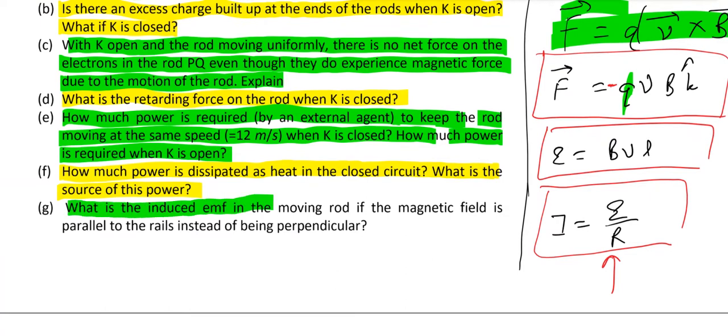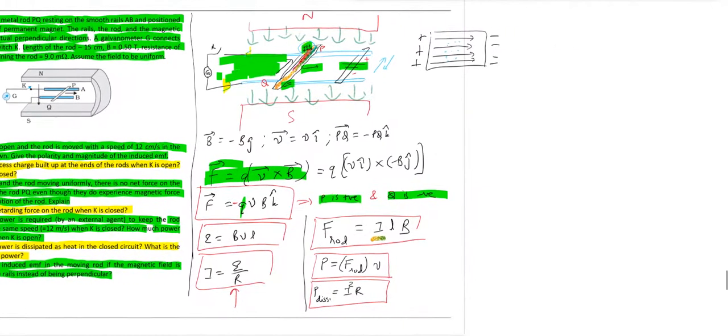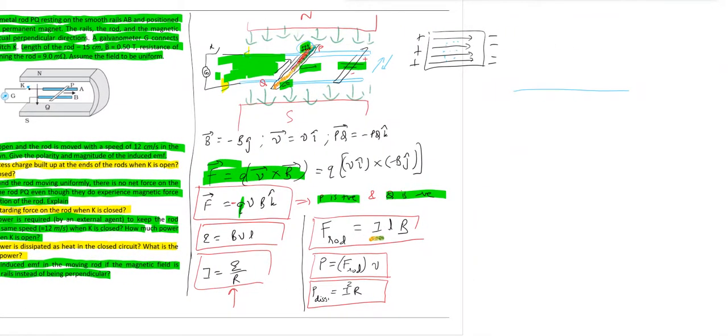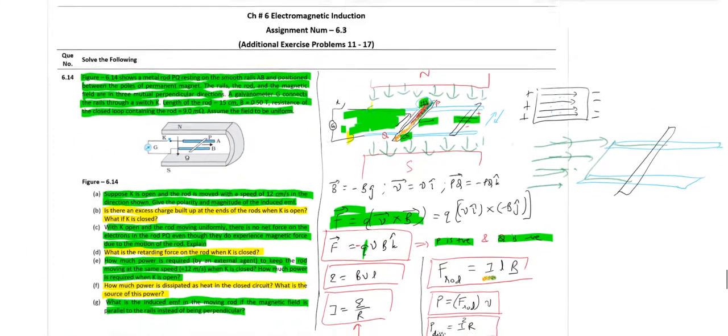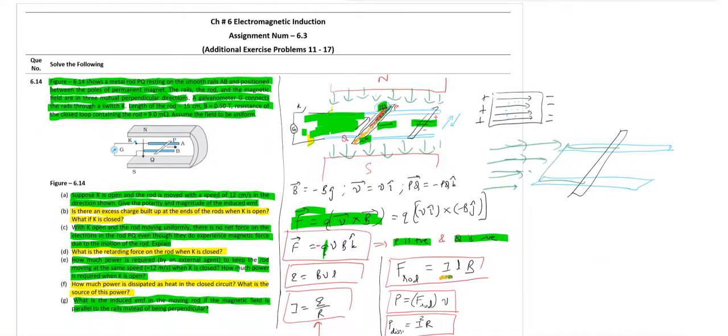What is the induced EMF in moving the rod if magnetic field is parallel to the rail? Now if magnetic field is parallel to the rail, so the condition would be like this: this is a rail, and here is our rod. Now if you apply magnetic field like this, there are no field lines passing through this closed loop, and then there is no flux link. There is no induction, so zero EMF will be induced if field is applied parallel to the loop. That is all about this problem, thank you.